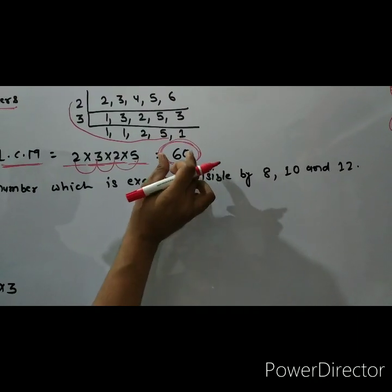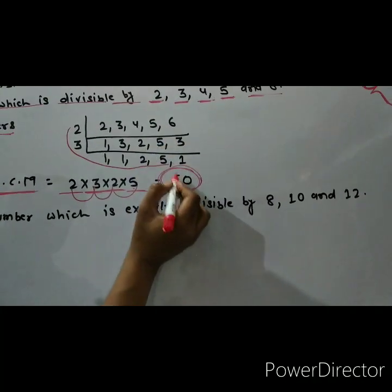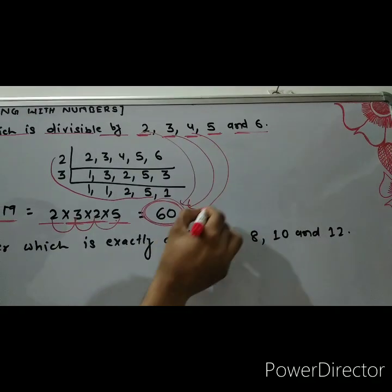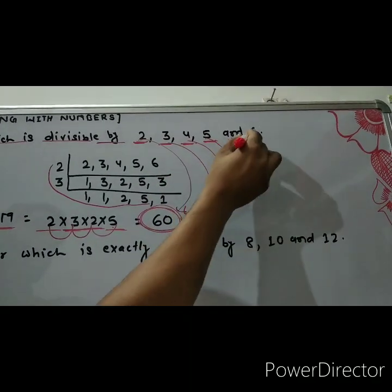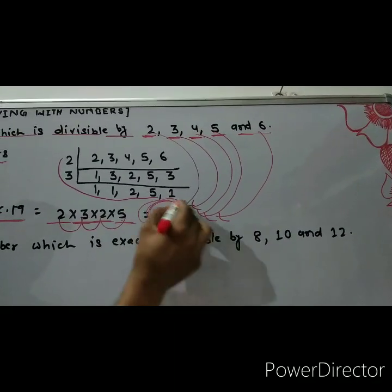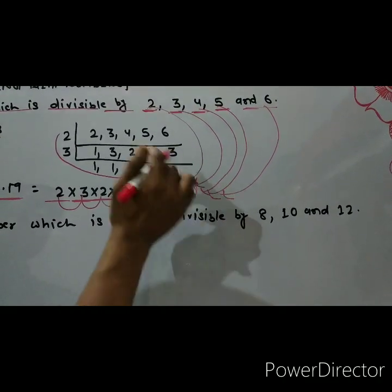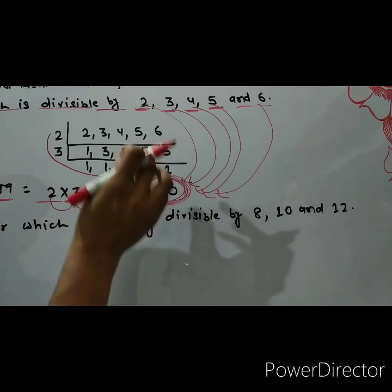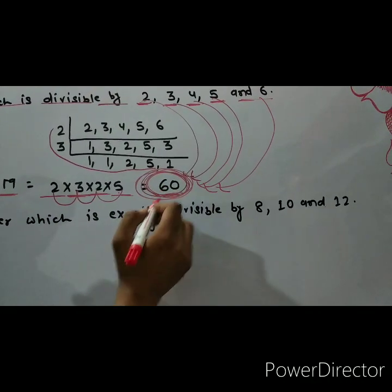So 60 is the smallest number which is exactly divisible by 2, 3, 4, 5 and 6 student. This is the smallest number which is exactly divisible by 2, 3, 4, 5 and 6. So 60 is the right answer.